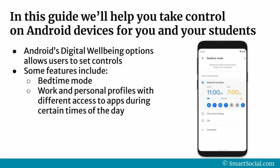On Android devices, we have an option called digital well-being, which allows users to set controls and reminders on their devices to help guide how and when they use the device. Some of the features in digital well-being include bedtime mode, work and personal profiles with different access to apps during certain times of the day, other focus modes, and the digital well-being dashboard, giving you a report to see how and when the device is being used to help learn about your behaviors on the device.